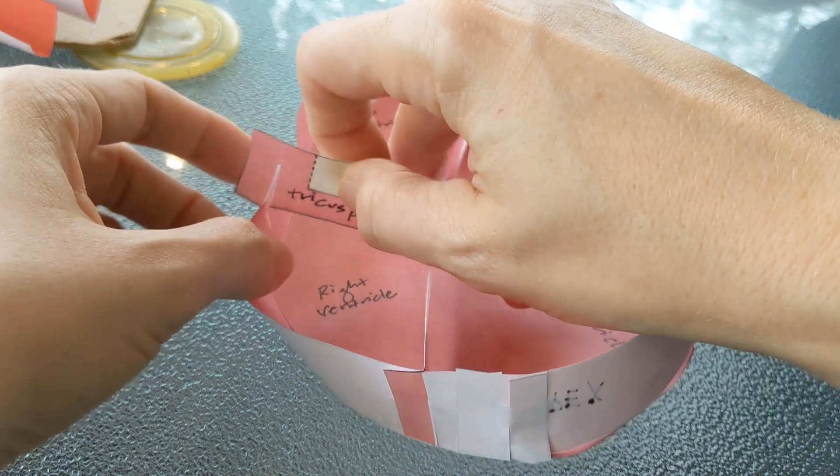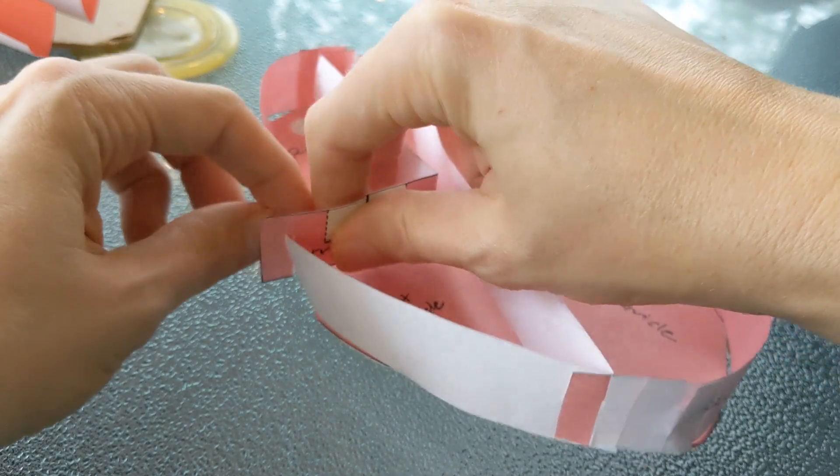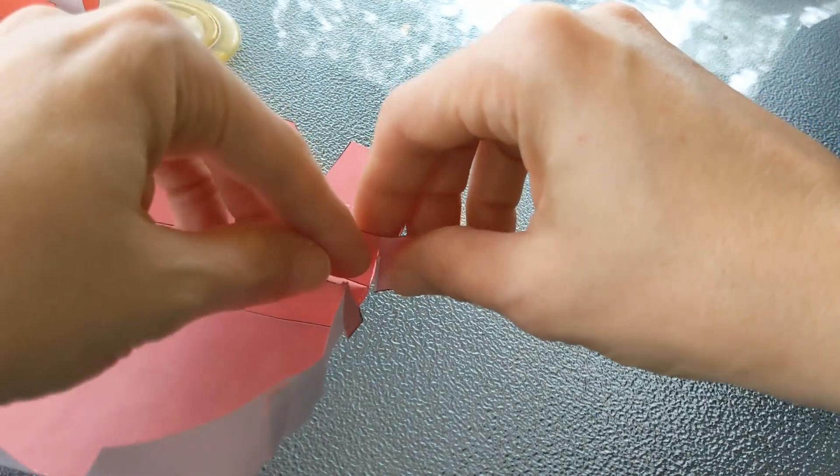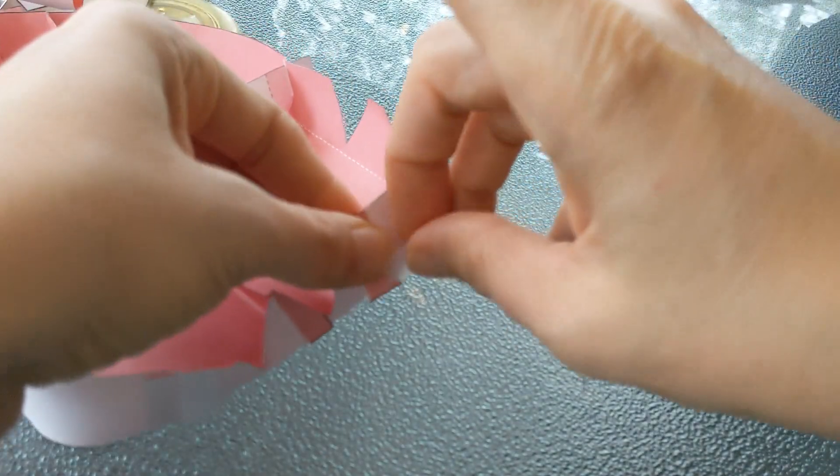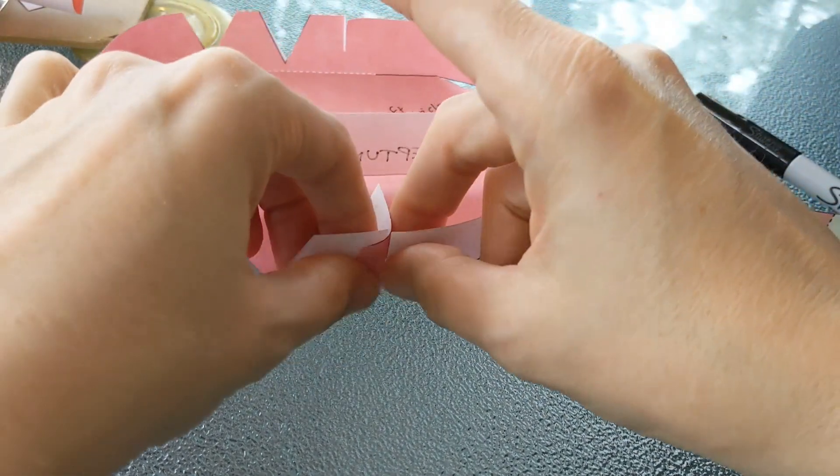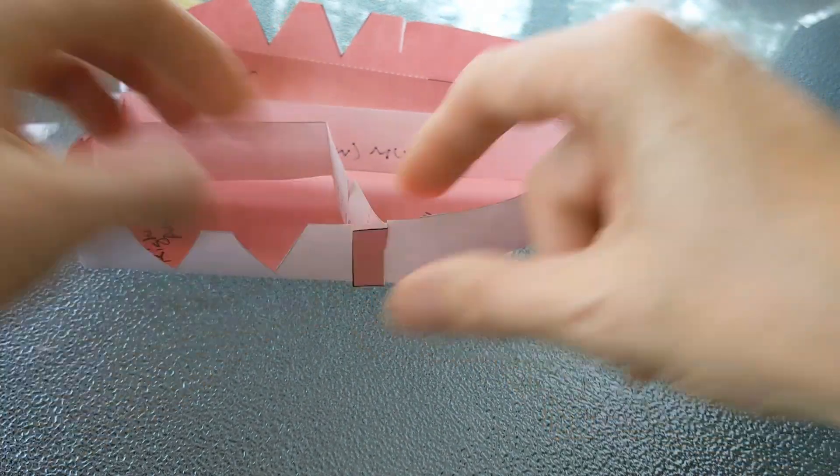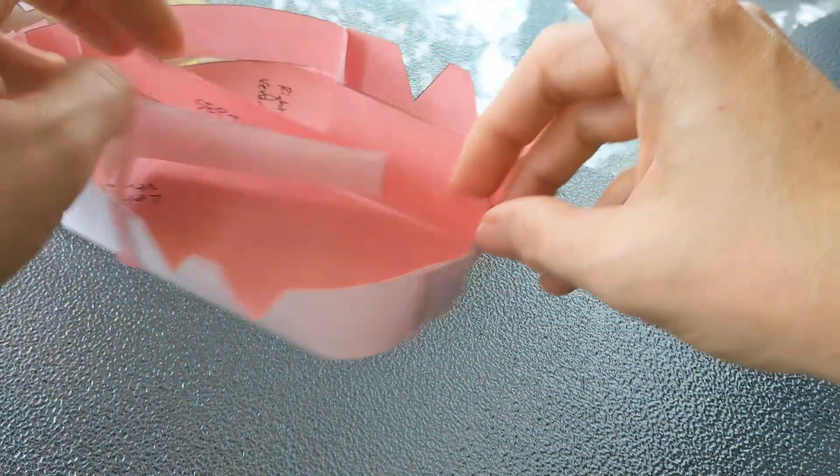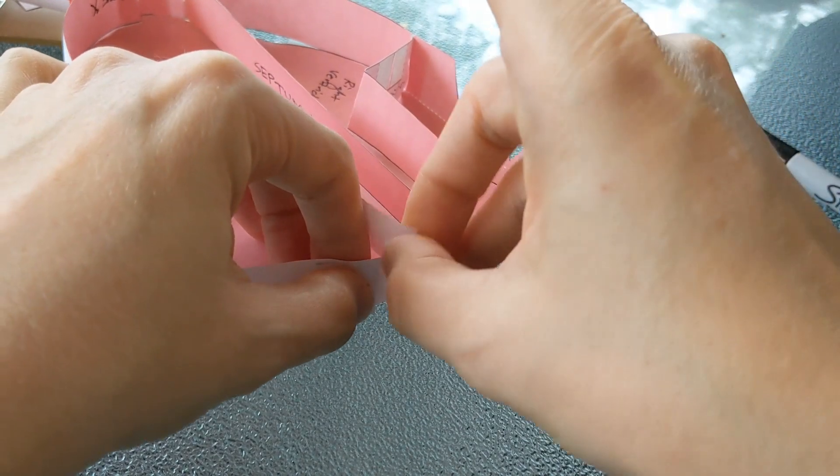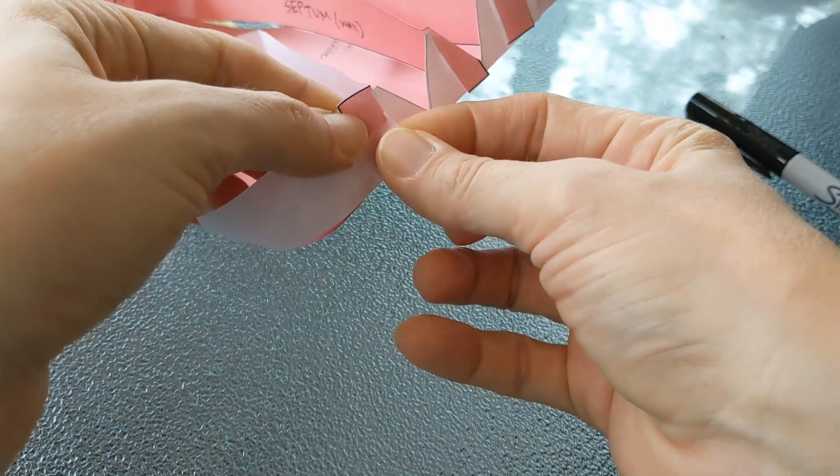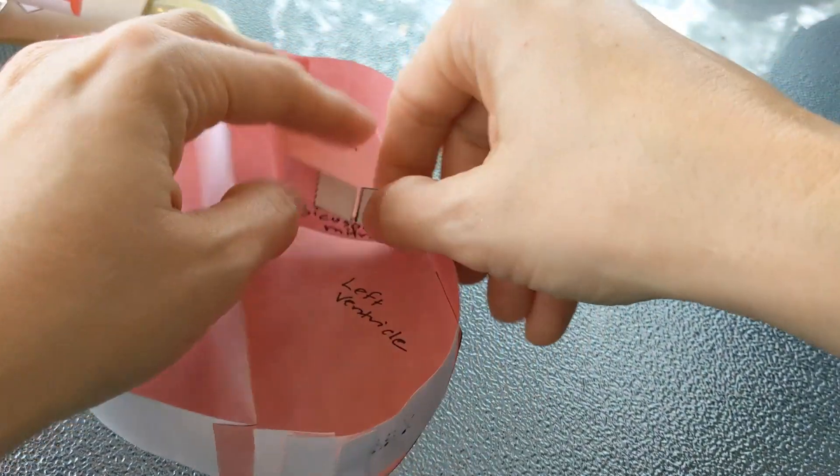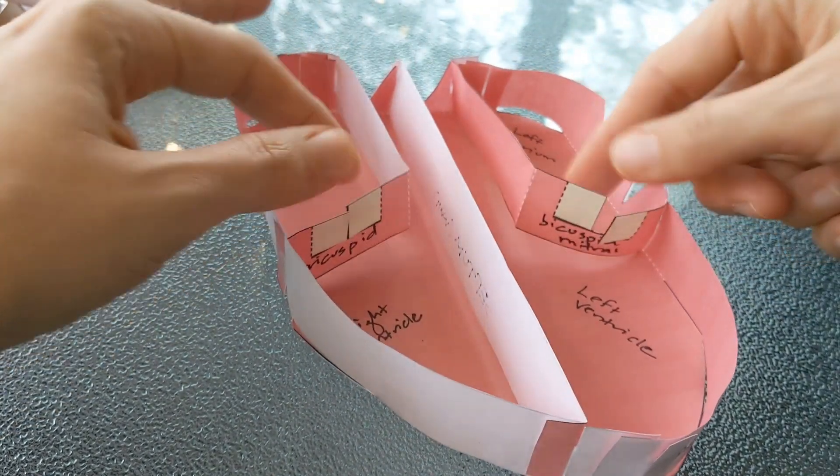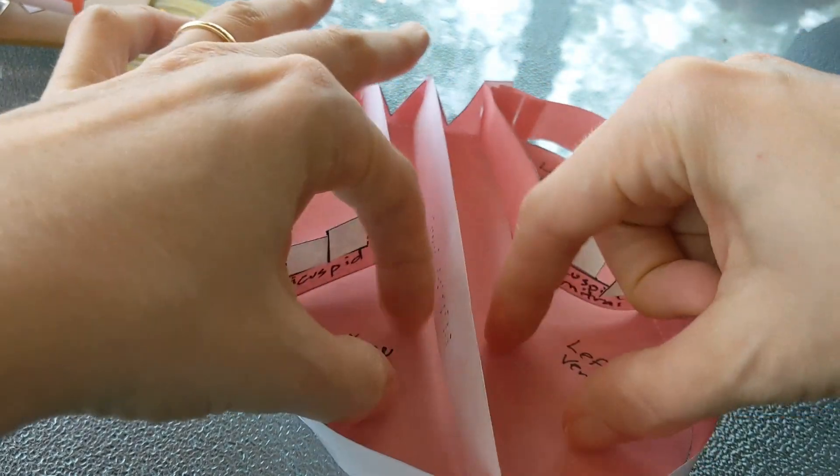Now we have to find the places where these fit into each other, the slits that we made. And then do a little bit of folding and taping. So when you are finished it should look like this. The blood comes into each atria, passes through each valve into the ventricle and then it leaves.